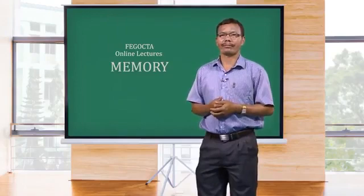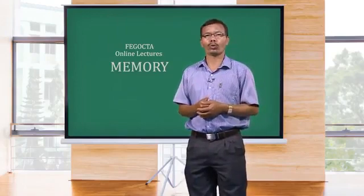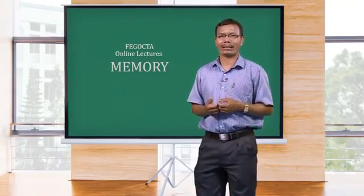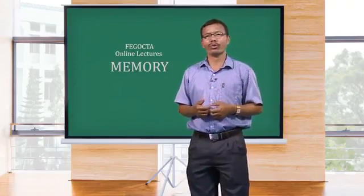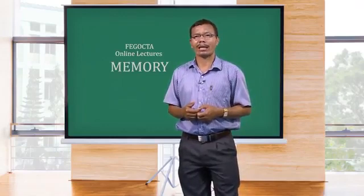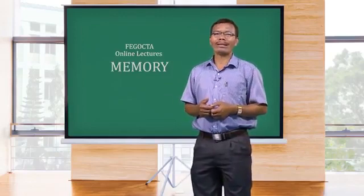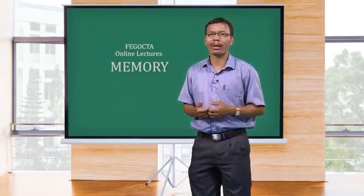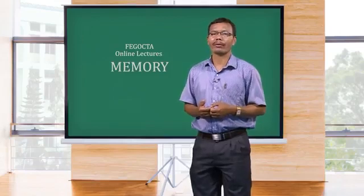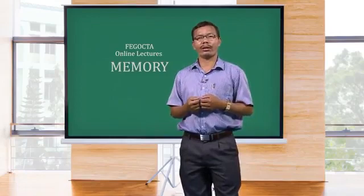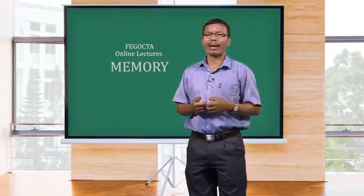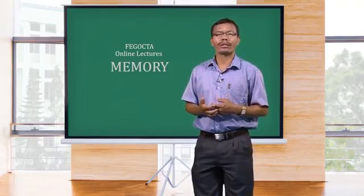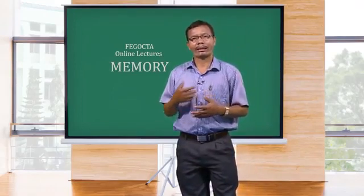Short-term memory is also known as working memory. It holds only a few items and lasts only for about 20 seconds. However, items can be moved from short-term memory via processes like rehearsal. For example, when someone gives you a phone number verbally and you say it to yourself repeatedly until you can write it down — if someone interrupts your rehearsal by asking a question, you can easily forget the number, since it is only being held in your short-term memory.